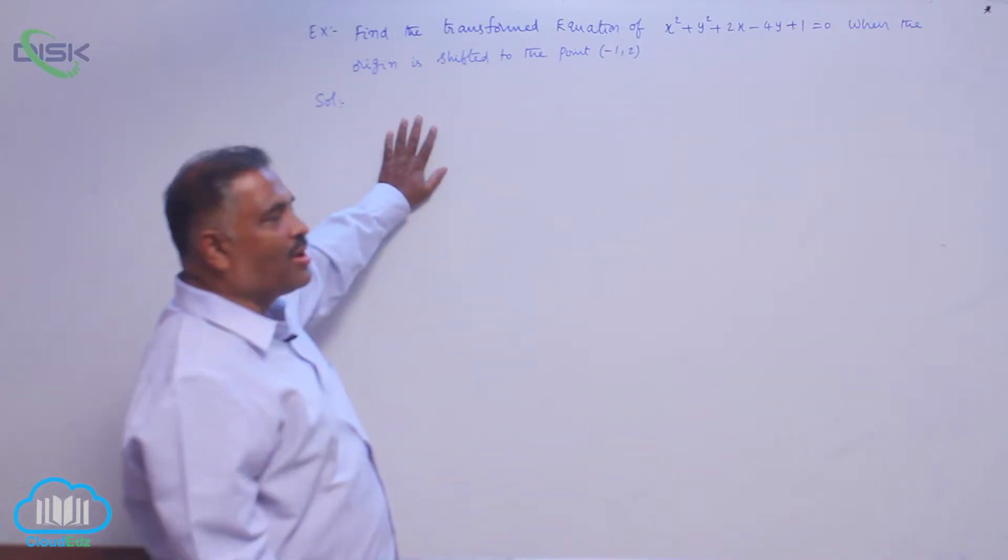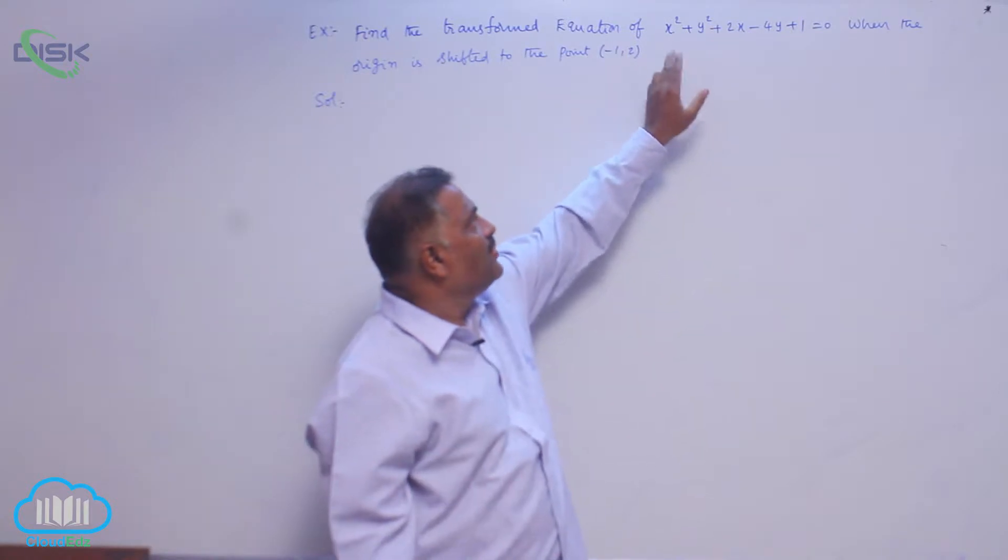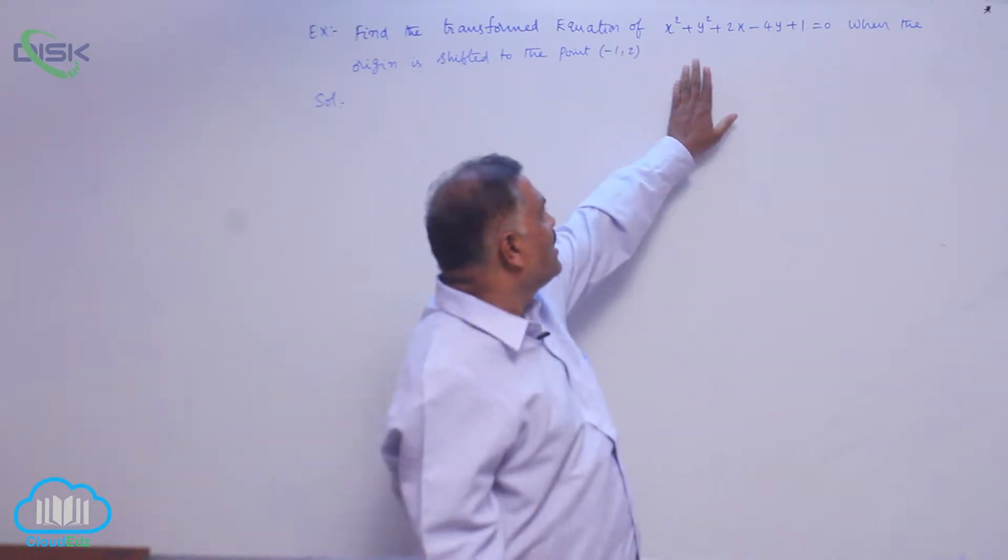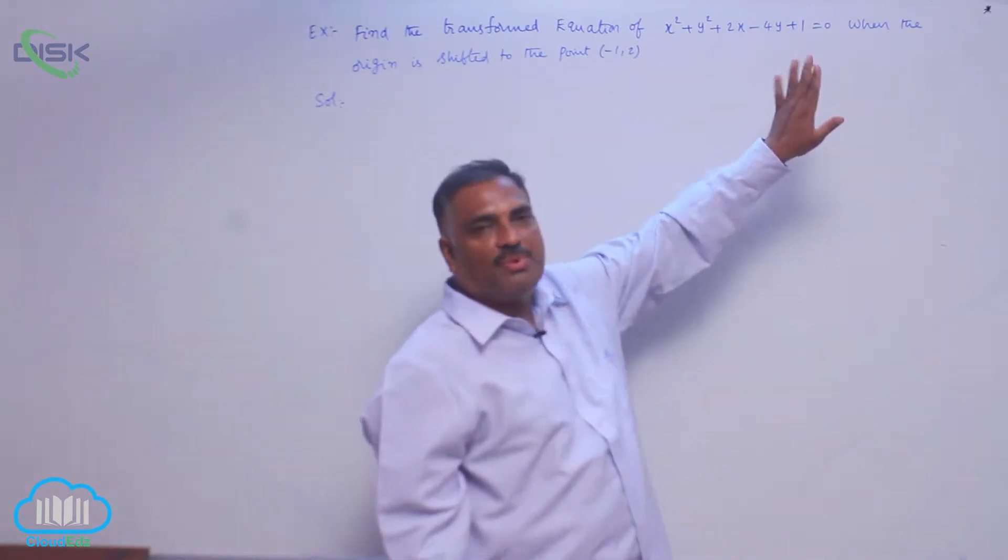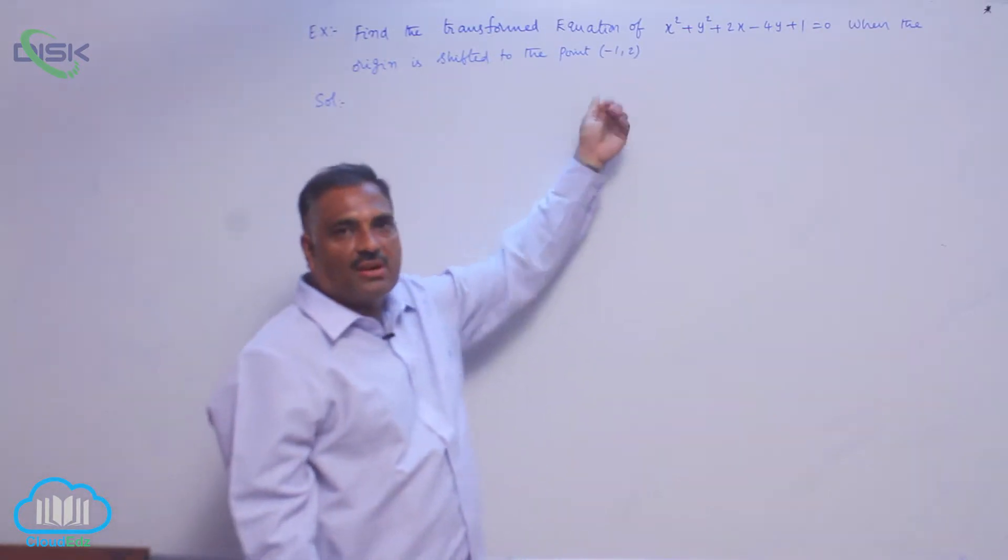Let us discuss one more problem in translation. Find the transformed equation of x² + y² + 2x - 4y + 1 = 0 when the origin is shifted to the point (-1, 2).